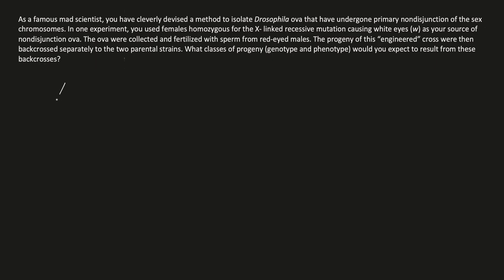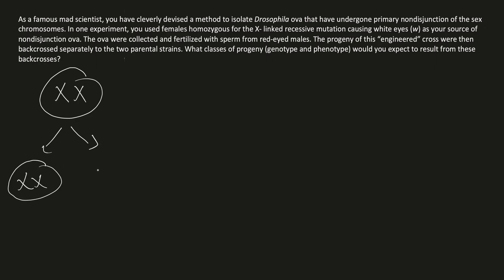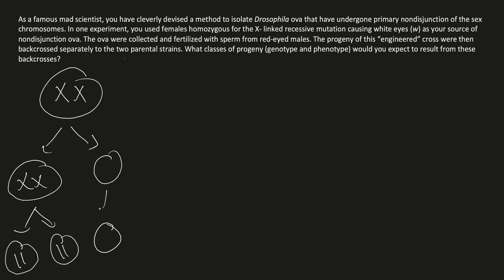If you had two X chromosomes in a female ova and it went through meiosis, the eggs don't split up properly. You get two X chromosomes in one and none in the other. This gives you two X chromosomes in one gamete and none in the other. So the genotype of one gamete would be WW instead of just one W allele, and the other would have nothing — represented by an empty circle.